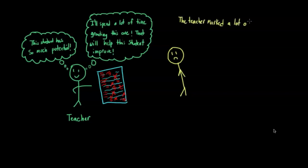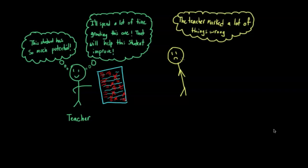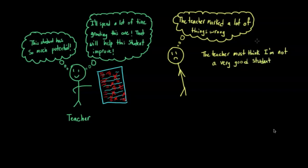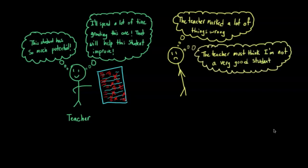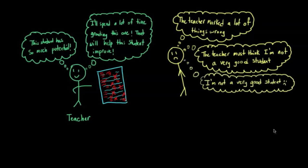First, the student might observe that the teacher criticized them harshly. Second, they think the teacher did so because they see the student as not very intelligent. Then the student concludes they're probably not very good at literary analysis. The student is acting on an incorrect perception of what they think the teacher believes. Because attitudes can influence behaviors, this might result in the student putting less effort into the class — the opposite of what the teacher originally wanted.